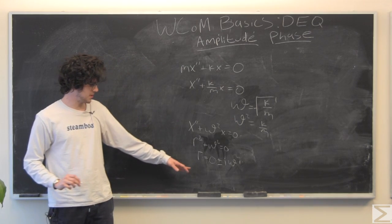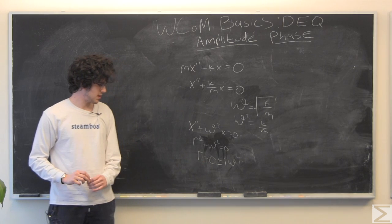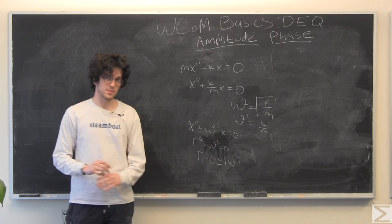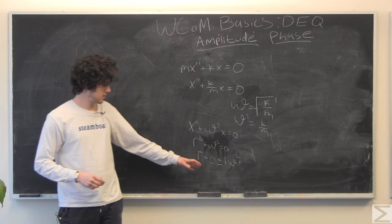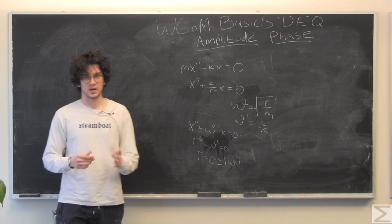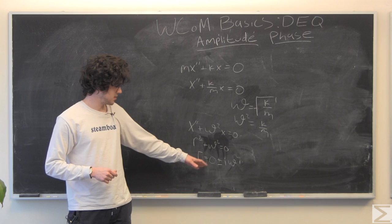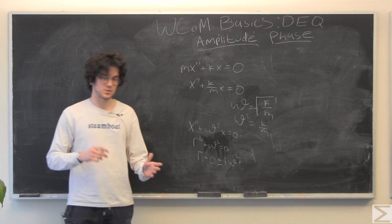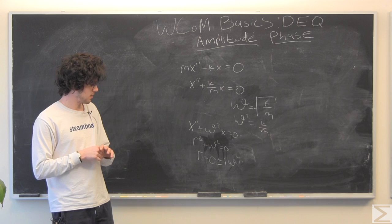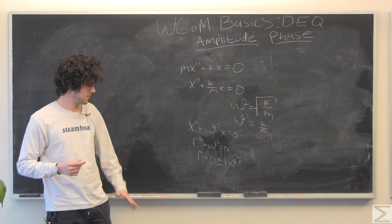Our roots are going to be zero, since b, we have no damping coefficient. This is from the quadratic formula. So, zero plus or minus i omega, since we're taking the square root of omega squared. And a is just one here.